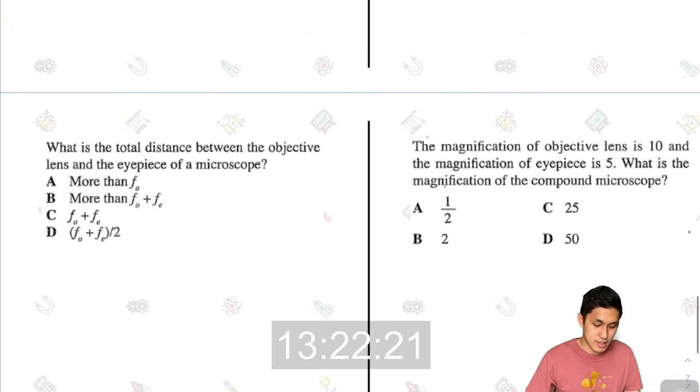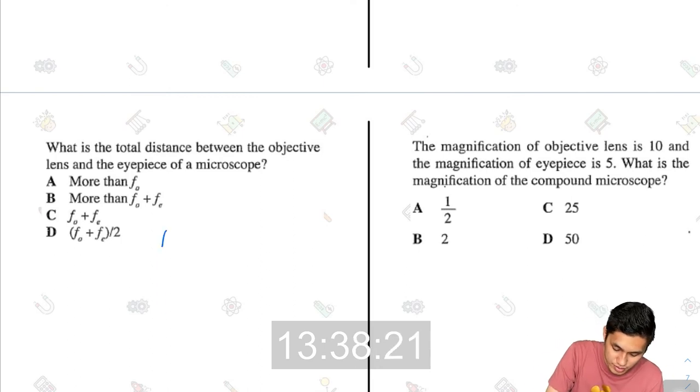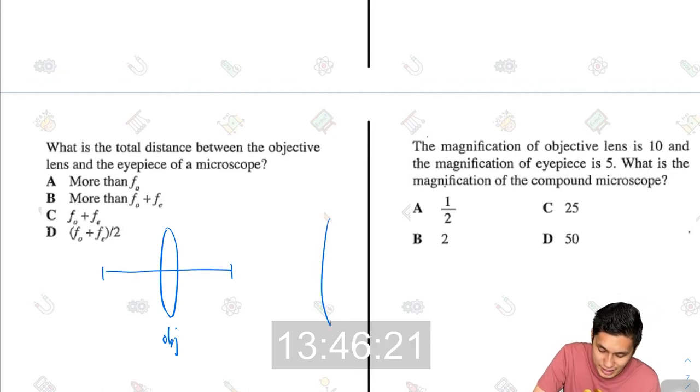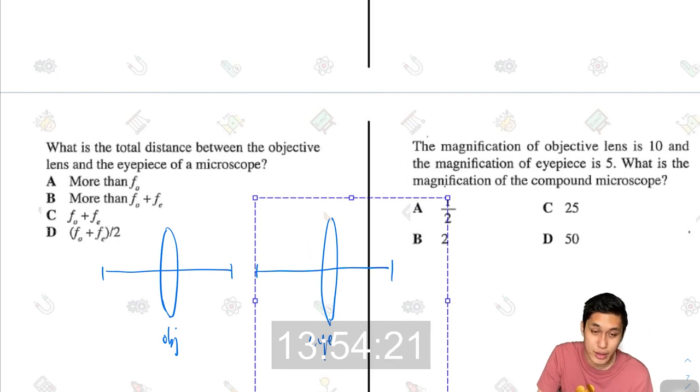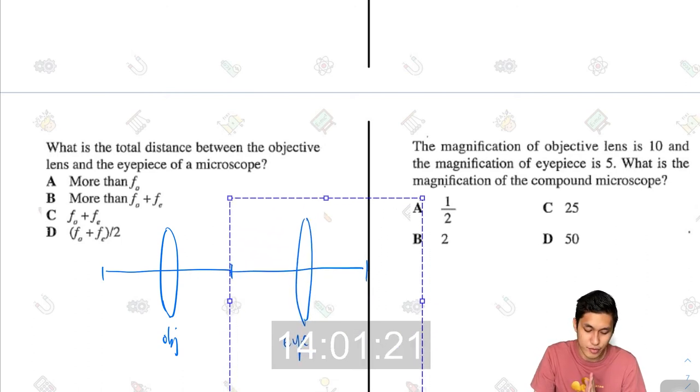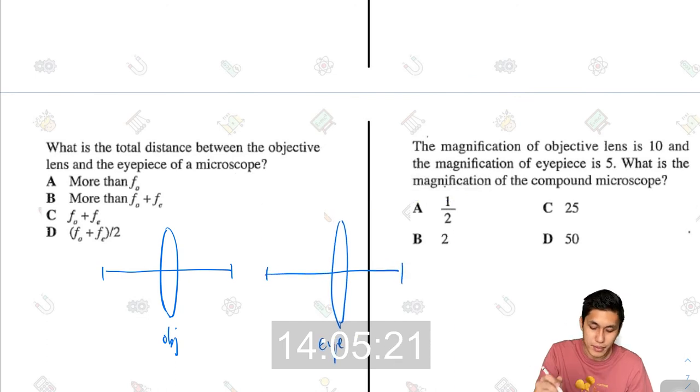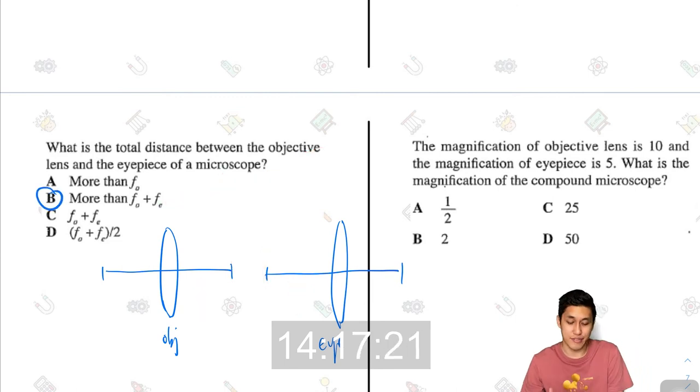Next one, what is the total distance between the objective lens and the eyepiece of a microscope? For a microscope, the placement of the lens would be that the objective lens will have a certain focal length. Let me just draw it out very quickly. This is the objective lens. This is the focal length of the objective lens. The eyepiece lens would have its own focal length and they would not be touching. Unlike in a telescope, whereby both focal lengths will actually meet. But in a microscope, it does not meet. So the total distance between the two lenses has to be FO plus FE plus a certain distance. So it has to be more than FO plus FE. That is a microscope.